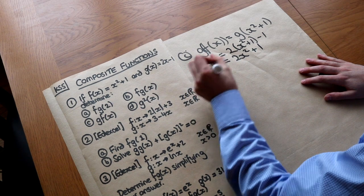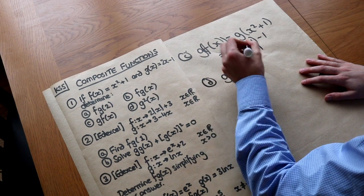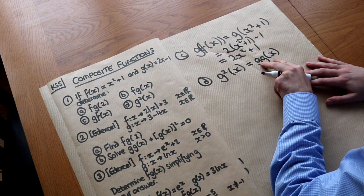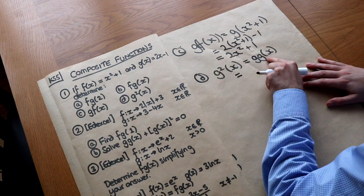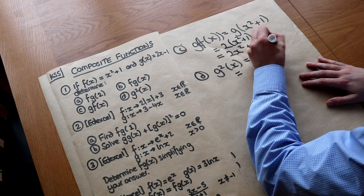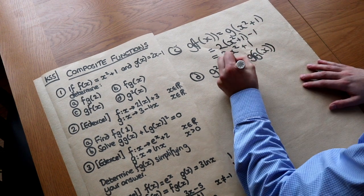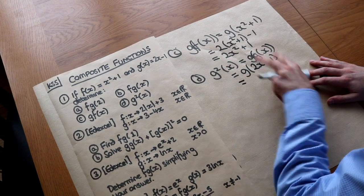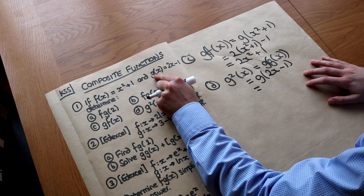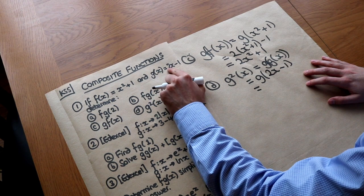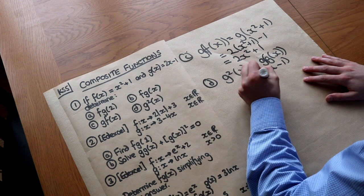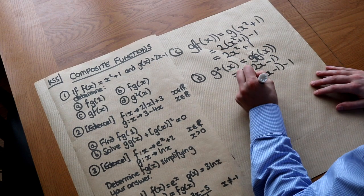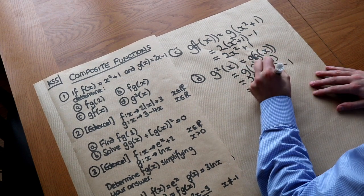For part d, g²(x) doesn't mean g(x) all squared — it means g(g(x)), applying g twice. So g(g(x)) = g(2x − 1). We replace x with 2x − 1 in g: 2(2x − 1) − 1, which expands to 4x − 2 − 1 = 4x − 3.